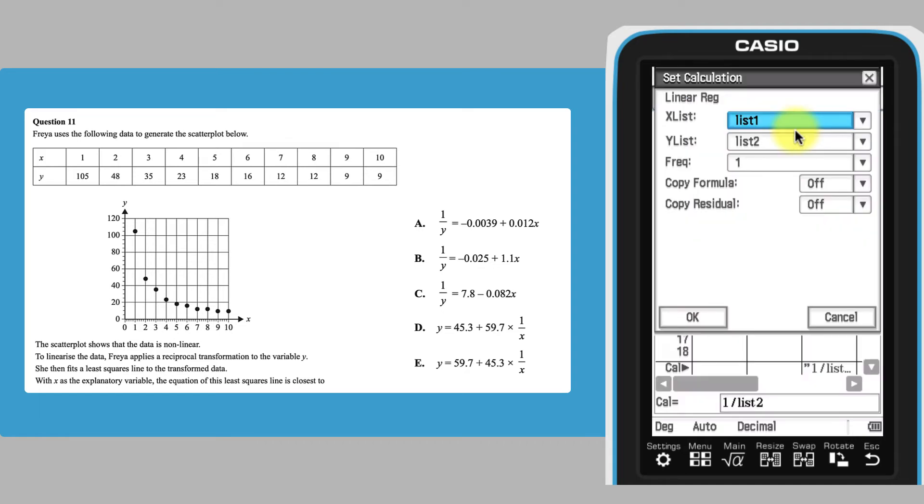Select the location of the data. Due to the transformation performed, the lists required are list 1 and list 3. If we were fitting the regression line to raw data, we would just have used list 1 and list 2.